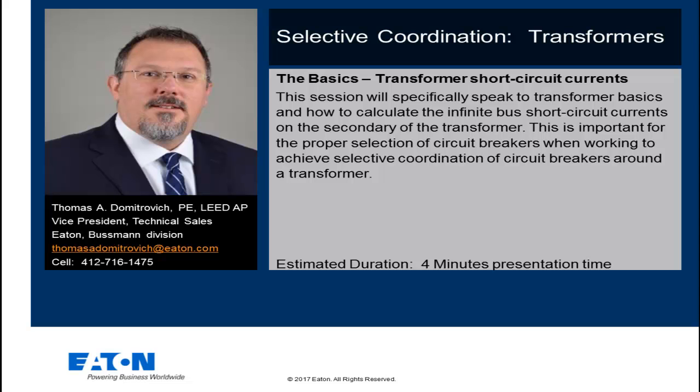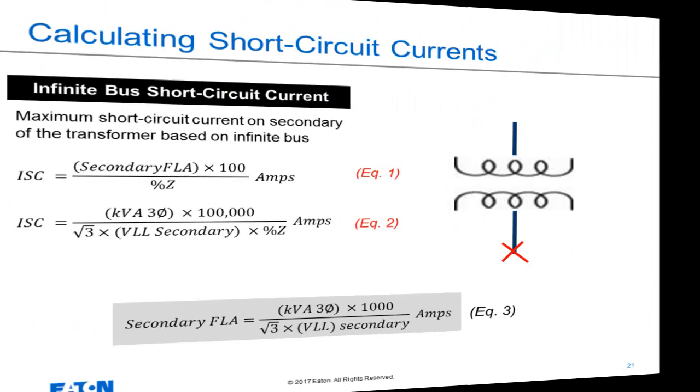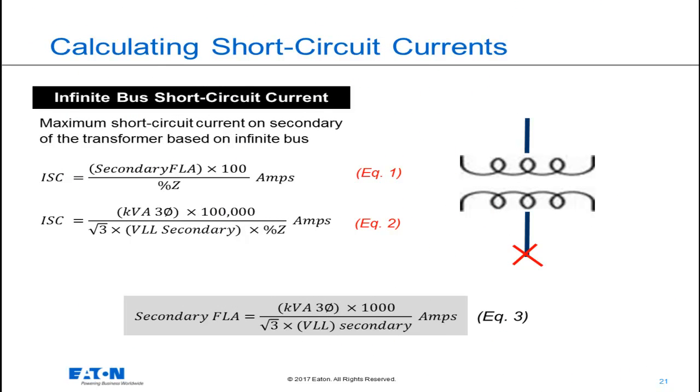The estimated duration of this presentation is four minutes. The infinite bus short-circuit current on the secondary of the transformer is really a simple calculation, and it provides us with a value of short-circuit current that is the most that that transformer can provide on its secondary. It's a conservatively high number, useful for specific applications of electrical equipment.